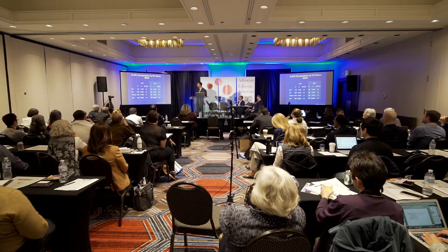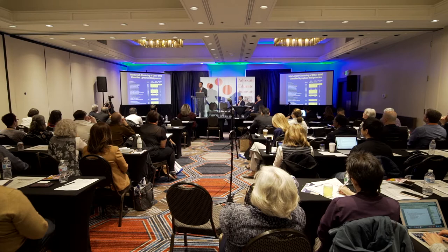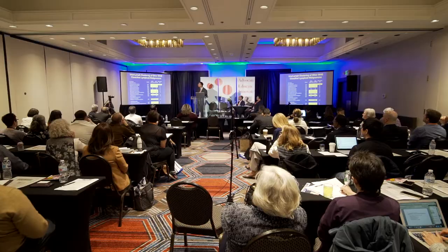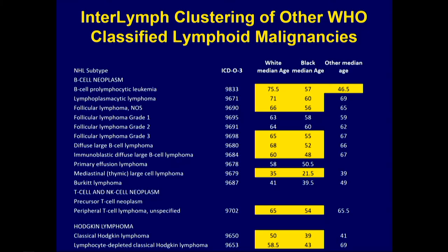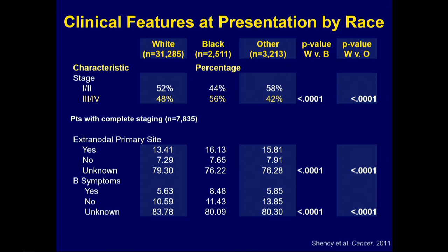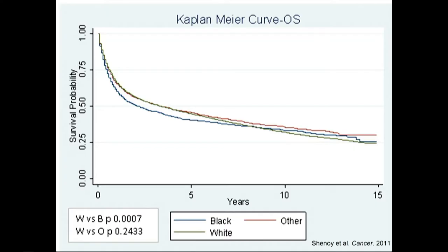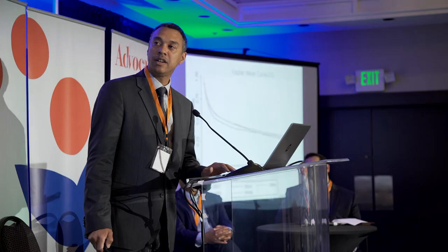This was not only true for DLBCL but for a number of hematologic cancers — black individuals presented about a decade younger for chronic lymphocytic leukemia, follicular lymphoma, and others expected to occur in older individuals. When looking at features at presentation, these tended to be individuals who presented with higher stage disease, as has been seen for other malignancies like colorectal and breast cancer among black patients. And survival was actually inferior for black patients compared to white patients or patients of any other race.